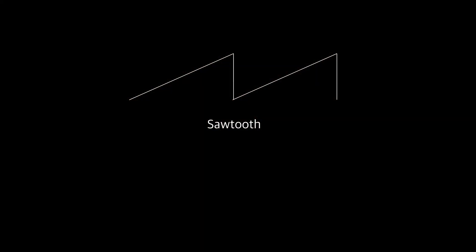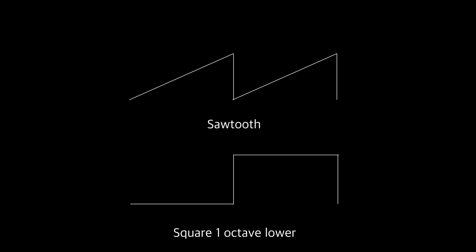The building blocks are a standard sawtooth or ramp wave and a square wave one octave lower. Some VCOs have a built-in sub octave square wave, but you can also create this by using the VCO's normal ramp or square to trigger a clock divider. The trick is in noticing that if you add the right amount of voltage to every second cycle of your saw, you'll get another saw with twice the amplitude and half the frequency.